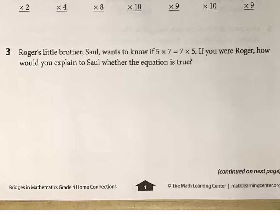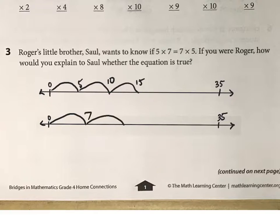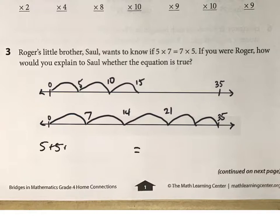You can just draw some kind of a picture or diagram to show that it's true. For example, if you want to use the number line — it won't look exactly perfect — you could show counting by 5s and then counting by 7s, five times. You could show 5 plus 5 plus 5 and so on, or over here you could do 7. You could draw a picture, you could do it however you want. Just show that those two are the same: 5 times 7 and 7 times 5.